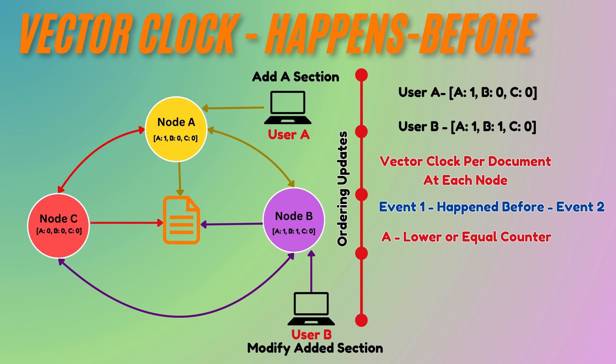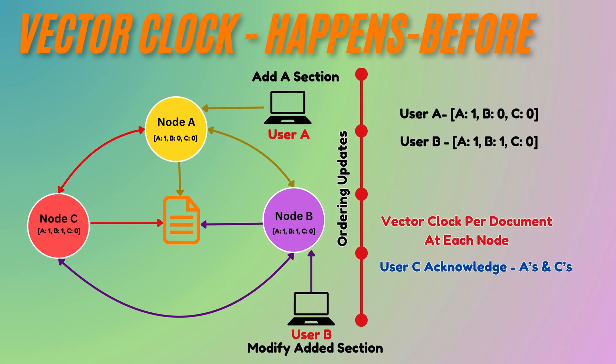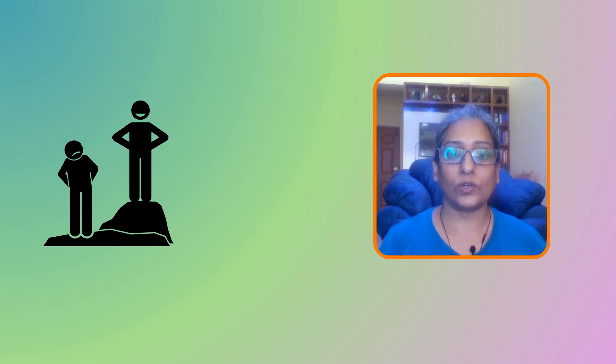This indicates that User B's action was aware of User A's earlier change. User C is aware of both A and B's updates and makes an independent edit, incrementing their counter. User C's change happened after being aware of A's and B's updates. Dominance is a key concept in detecting causality with vector clocks.